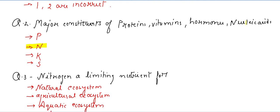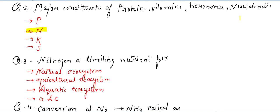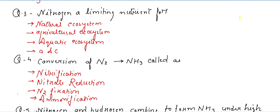The third question: nitrogen is a limiting nutrient for which ecosystem? Options: natural ecosystem, agricultural ecosystem, aquatic ecosystem, or both natural and aquatic ecosystems. The answer is both A and C — nitrogen is a limiting nutrient for both natural ecosystems and aquatic ecosystems.